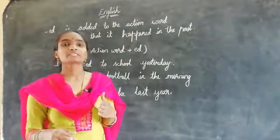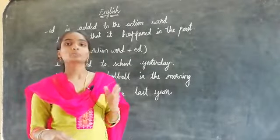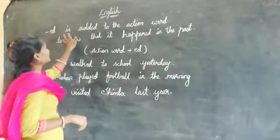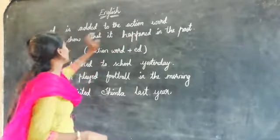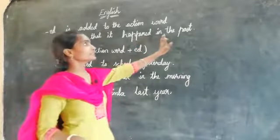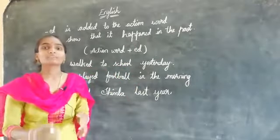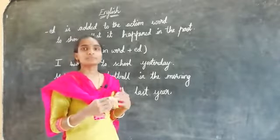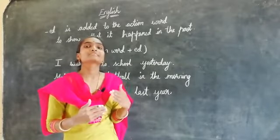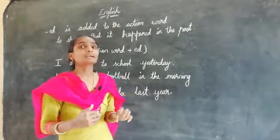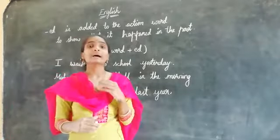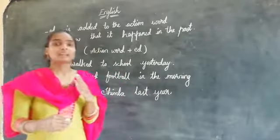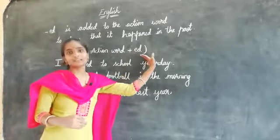Okay children, now I am going to explain about how to add '-ed' to the action word. Ed is added to the action word to show that it happened in the past. Whatever action word takes place in the past — like we have done '-ing' for what is happening in the present situation — here we are going to add '-ed' to the action word which already took place in the past. Action word plus ed.